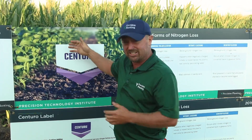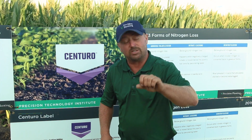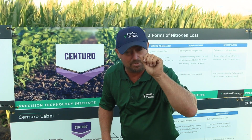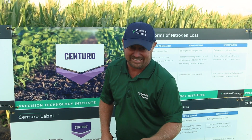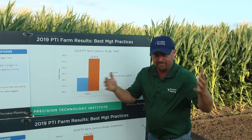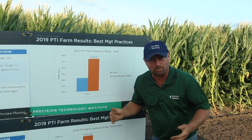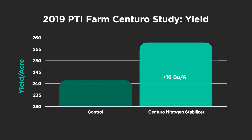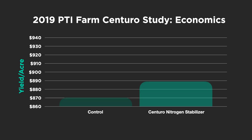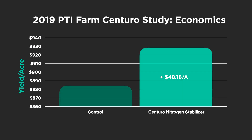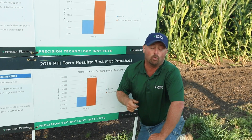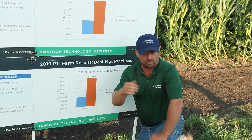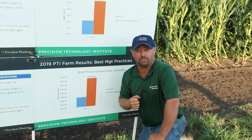Last year when we used this product, we saw great results as well. Let's look at the yield and economics from 2019. We saw some early season heavy rains, and where we used Centuro we saw really nice returns — 16 bushel per acre yield increases in corn. If we equate that to economics, taking the yield increase times the price of corn less the cost of the product, we come in at a net profit of $48 per acre advantage. This product worked very well for us in 2019, and based on the soil nitrate results we just discussed, I wouldn't be surprised if we see something very similar in 2020.